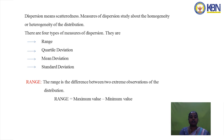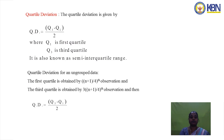Range is the difference between two extreme observations of the distribution. For a given problem, we choose the maximum value and the minimum value. The range is maximum value minus minimum value.